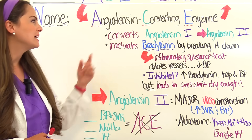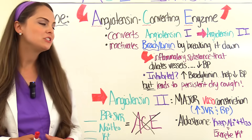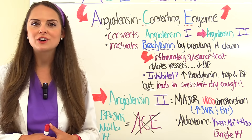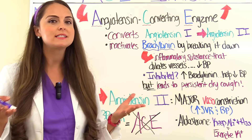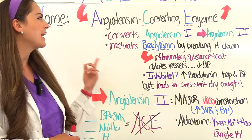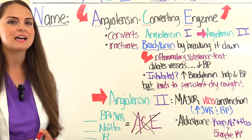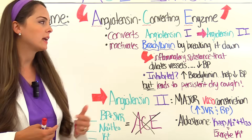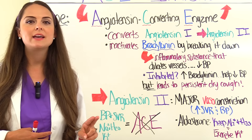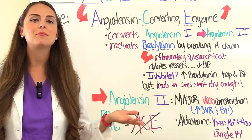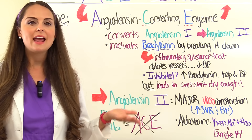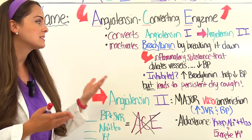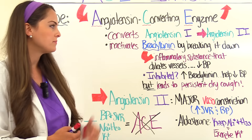Let's talk more about angiotensin converting enzyme and angiotensin II to drive home some key points. When ACE is not inhibited, it converts angiotensin I into angiotensin II, causing major vasoconstriction, increased blood pressure, and increased systemic vascular resistance. Another thing ACE does when not inhibited is it inactivates a substance called bradykinin by breaking it down.